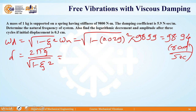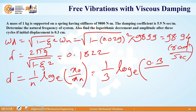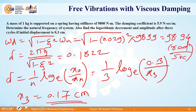From this we can also get the value of delta, which is 2π·zeta upon under root of (1 minus zeta squared). Solving this gives delta as 0.1822. Delta is also equal to (1/n)·ln(x0/xn). In this case n is 3, x0 is 0.3, and solving for x3 we get 0.17 centimeters. This is how we get the amplitude after 3 cycles.